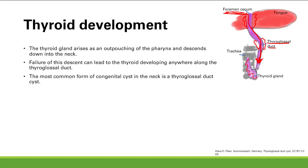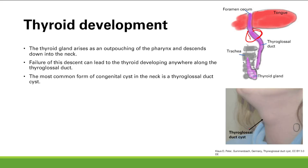The most common congenital cyst in the neck is a thyroglossal duct cyst. The thyroglossal duct persists in children and can pouch out as a cyst. It presents as an anterior and midline neck mass. You want to distinguish this from a branchial cleft cyst, which is located in the lateral part of the neck. So: lateral neck mass = branchial cleft cyst; anterior and midline neck mass = thyroglossal duct cyst.